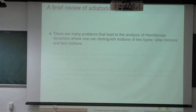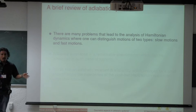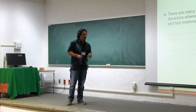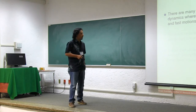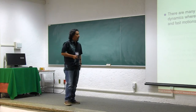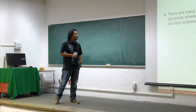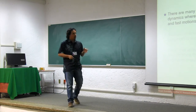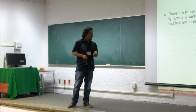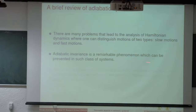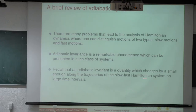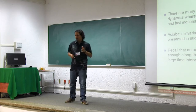I will start with a brief and non-exhaustive review of adiabatic systems, highlighting some facts and well-known results. These systems arise because there are many problems that lead to the analysis of Hamiltonian dynamics where one can distinguish motions of two types: slow motions and fast motions. The adiabatic invariance is a remarkable phenomenon which can be presented in such classical systems. An adiabatic invariant is a quantity which changes, but by small enough amounts, along the trajectories of the slow Hamiltonian system on large time intervals.